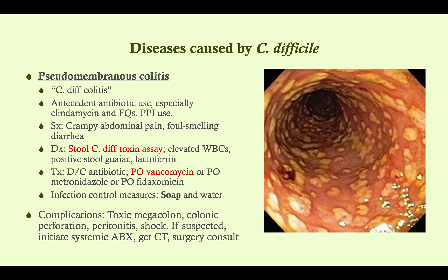The disease caused by C. difficile is called pseudomembranous colitis — you'll also hear C. diff colitis. This is not the same as antibiotic-associated diarrhea. Antibiotic-associated diarrhea is where you take an antibiotic, it alters the flora of the intestine, and leads to diarrhea. C. diff colitis is one type of antibiotic-associated diarrhea, but not all antibiotic-associated diarrheas form pseudomembranes. If you hear antibiotic-associated diarrhea, do not assume it's pseudomembranous colitis — that's a big mistake.